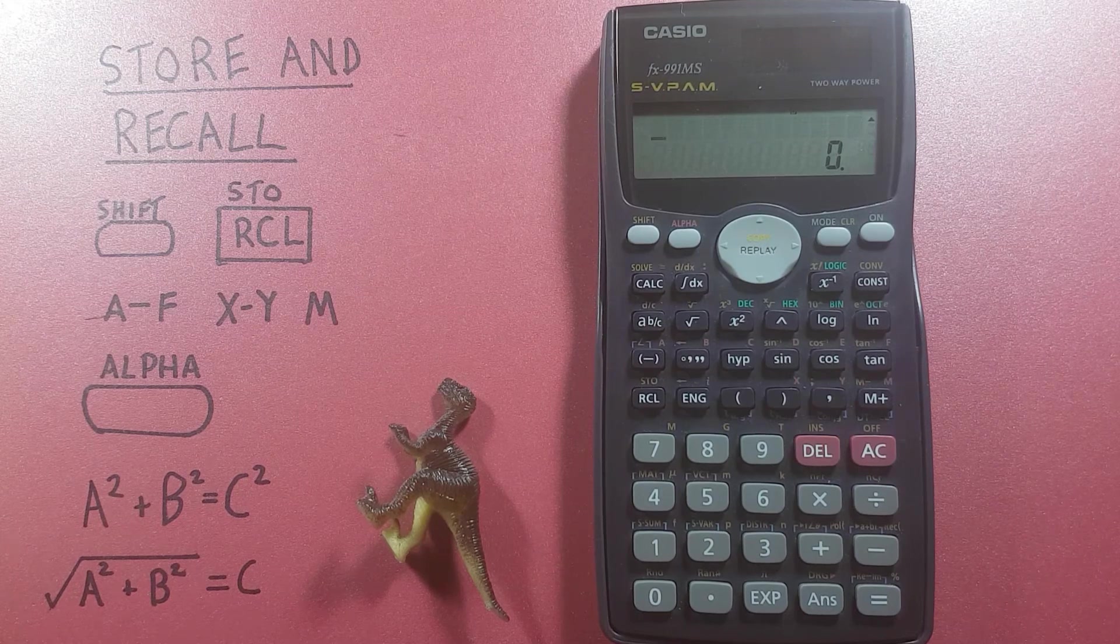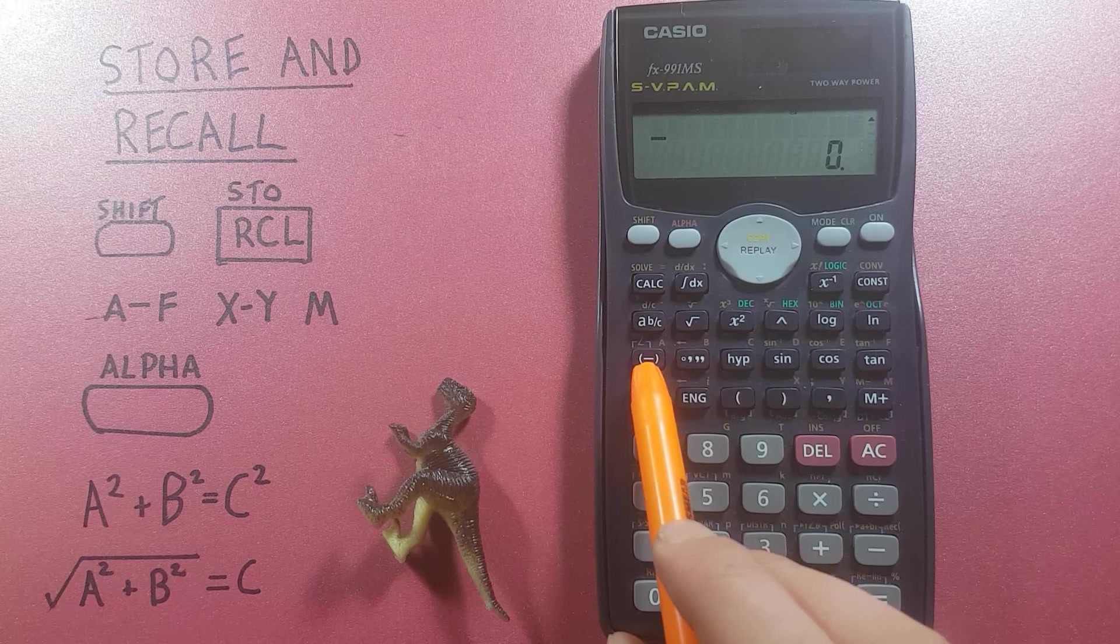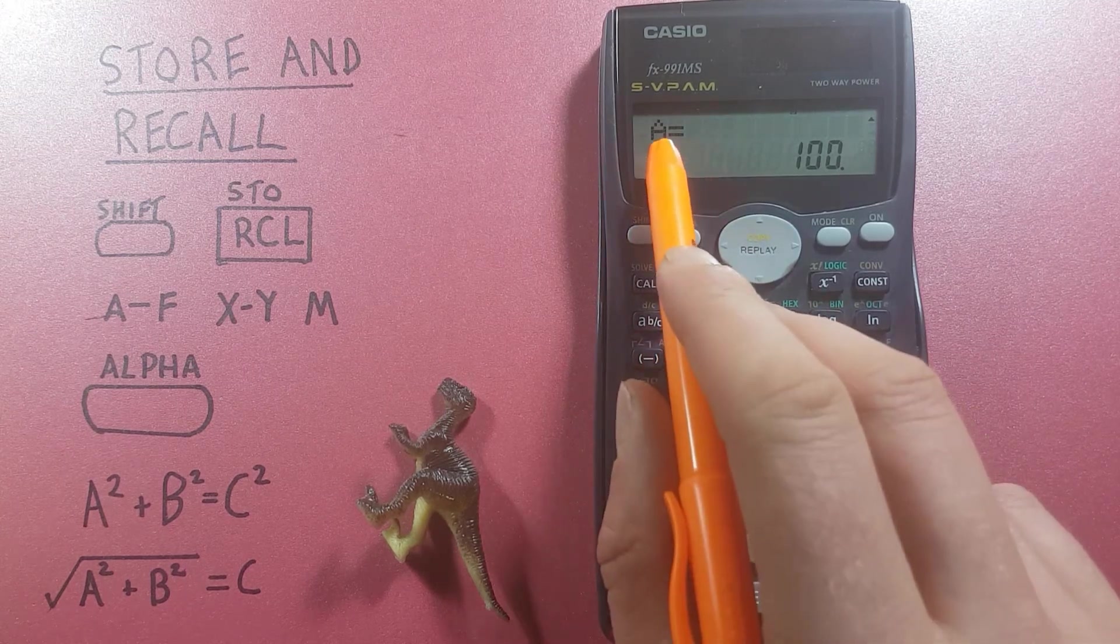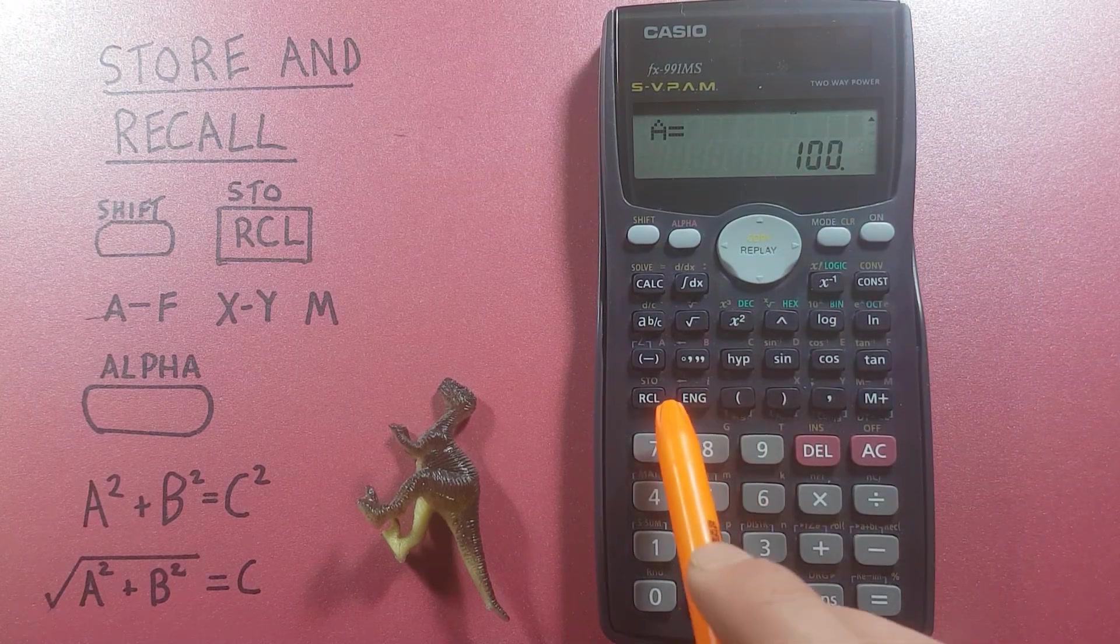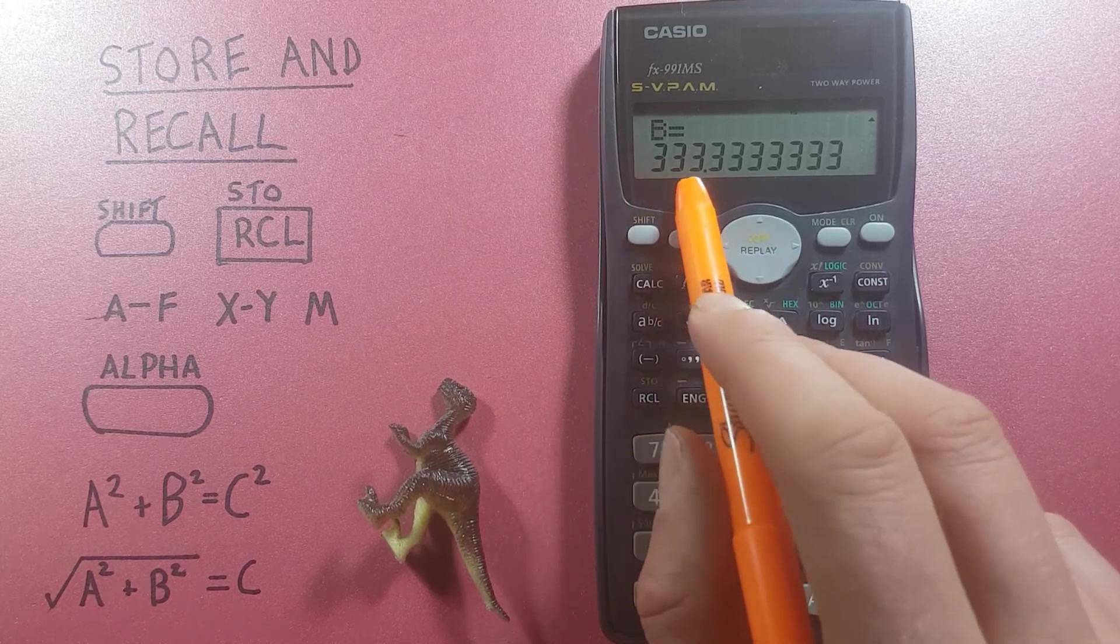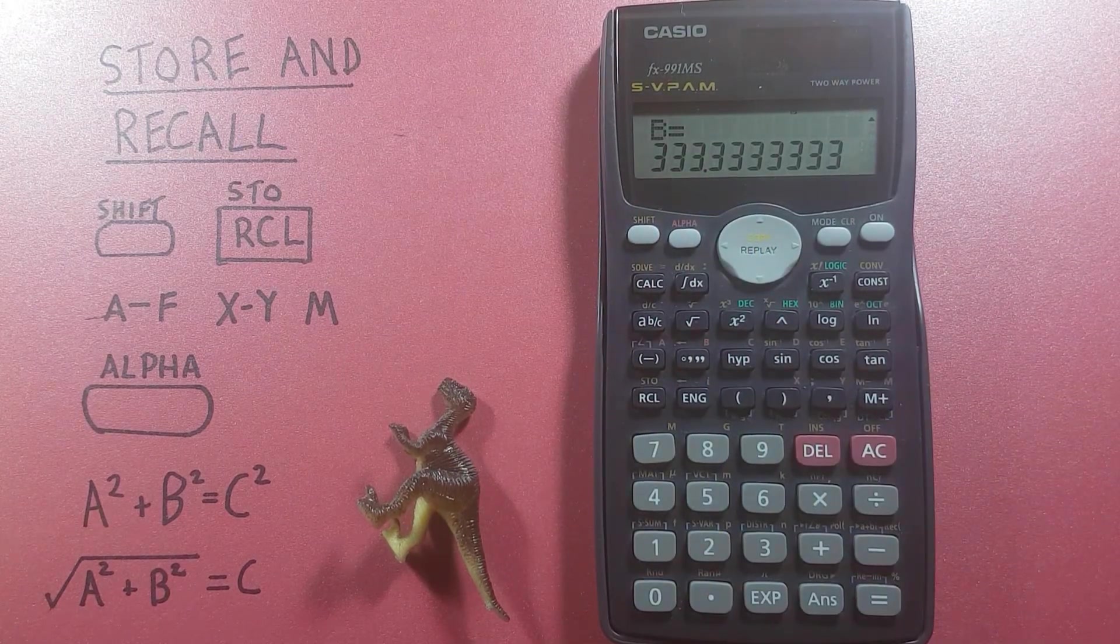We can recall these values with the RCL key. So to recall our A save slot we press RCL A. There we see A equals 100, and our B save slot RCL B, 333.333 which is what we got from 1000 divided by 3.